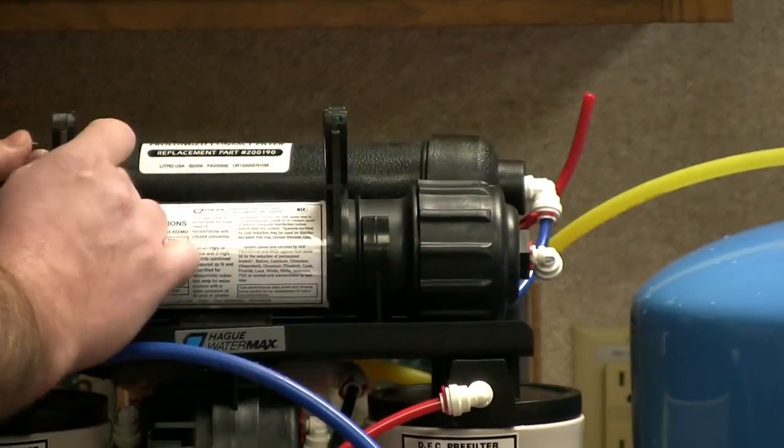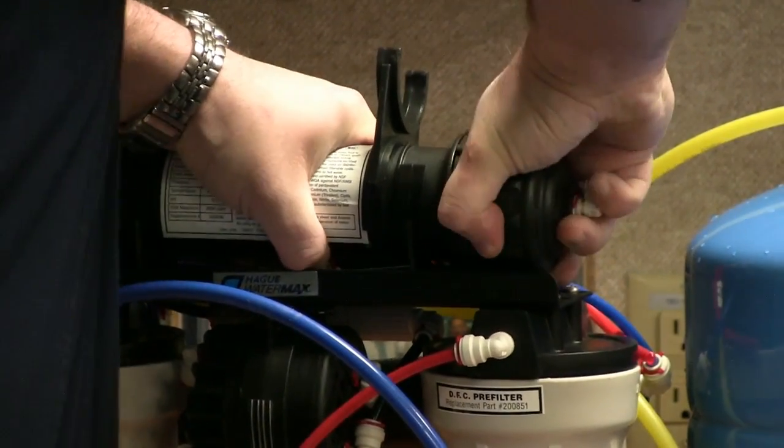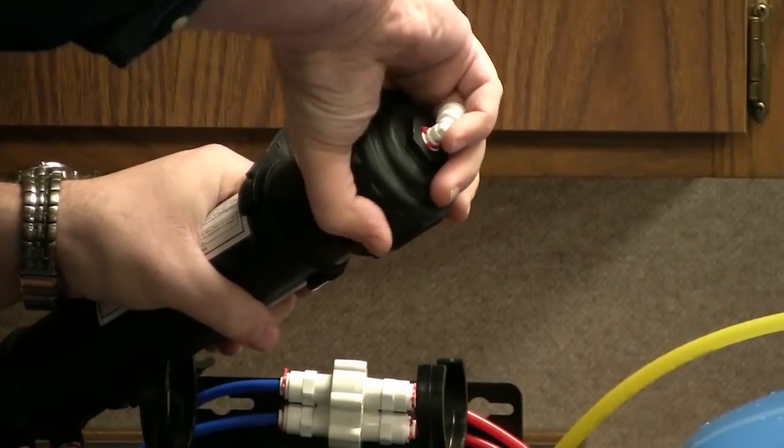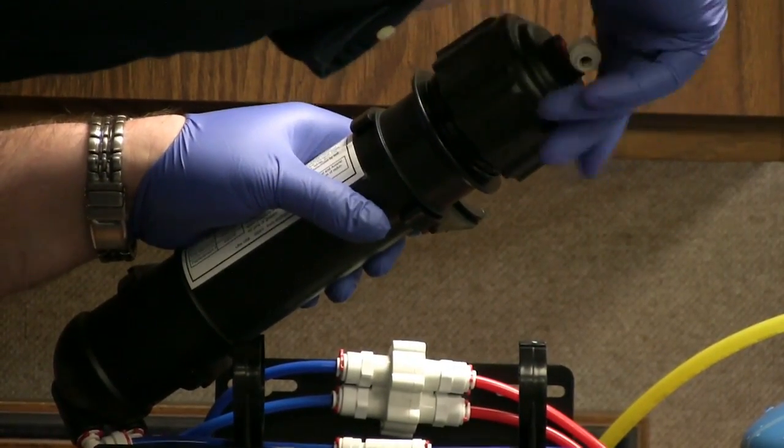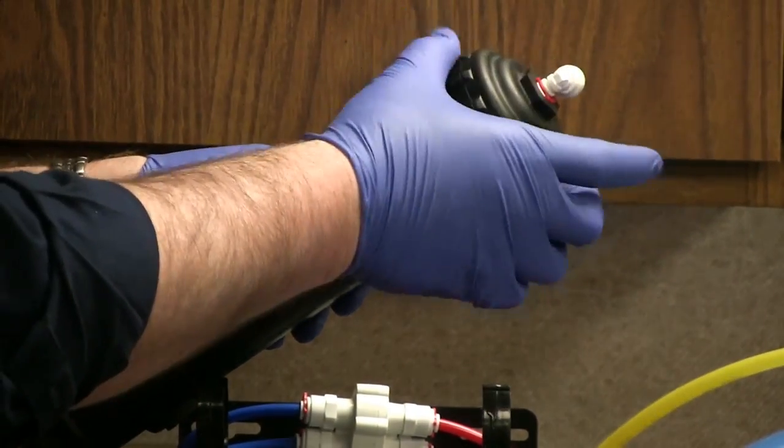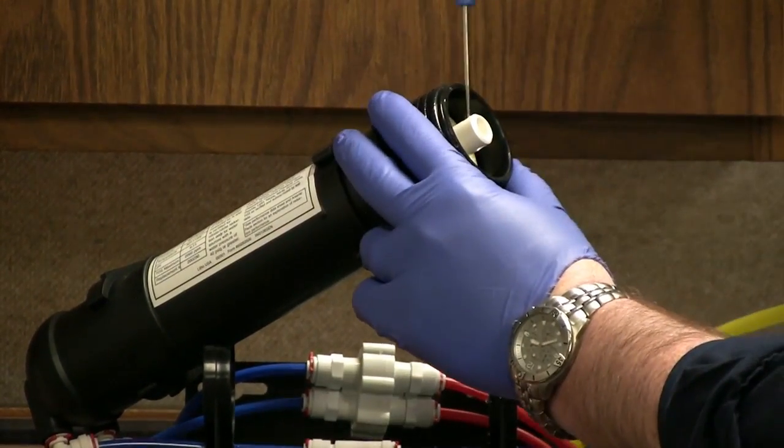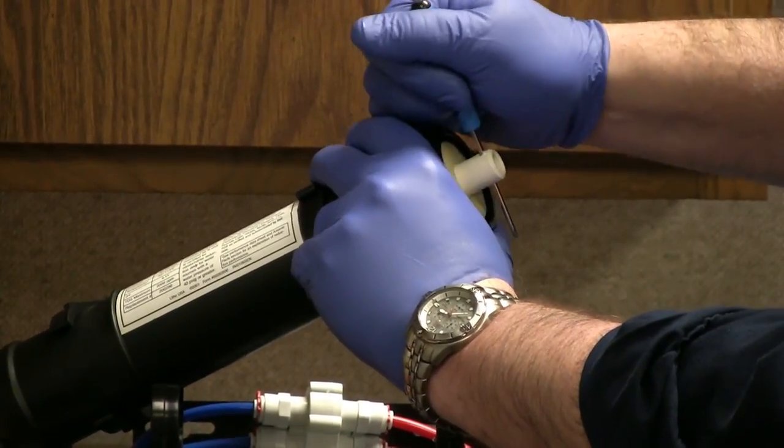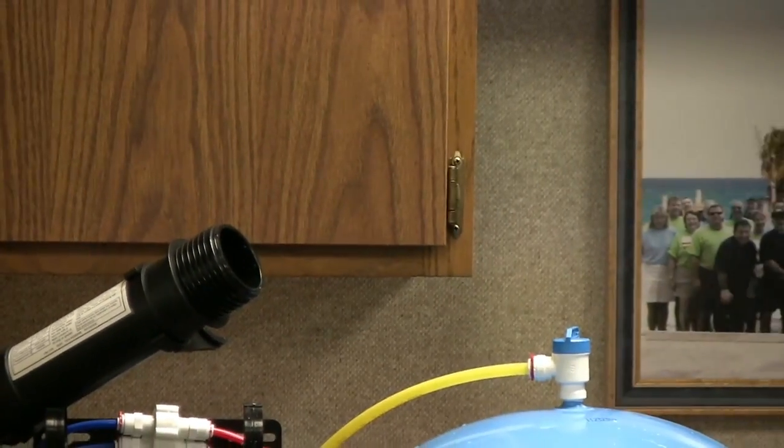You can remove the prolonged contact filter from the clips here. And the RO module itself will pop out of the clips. With a small screwdriver, you can remove the existing or used membrane.